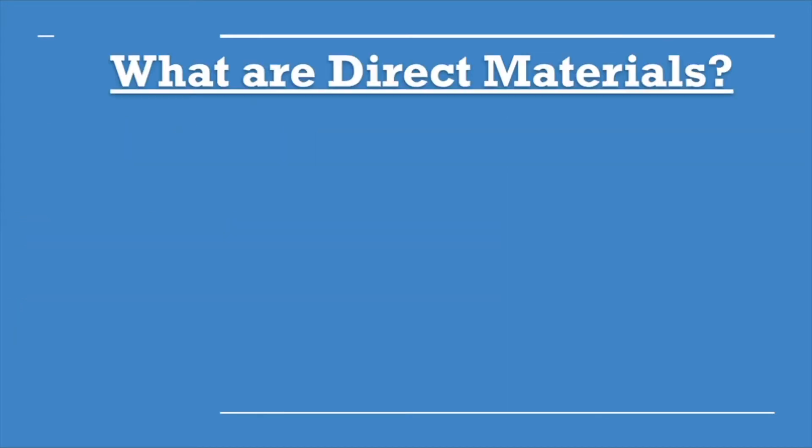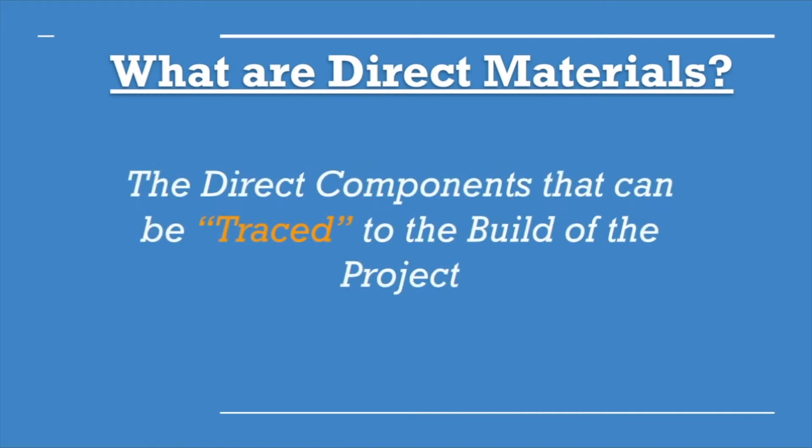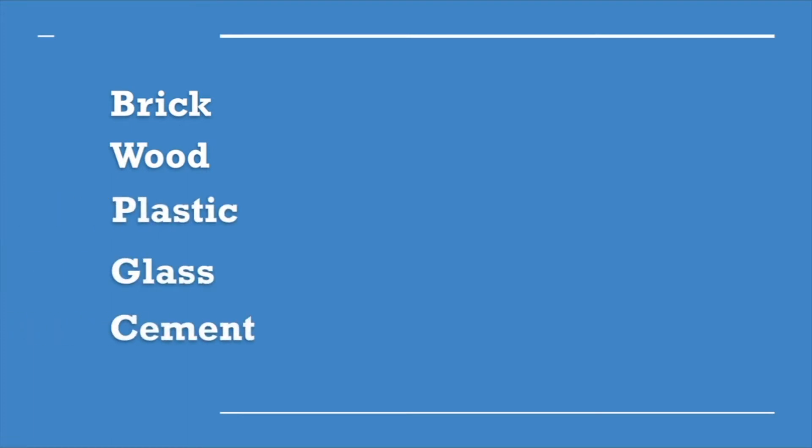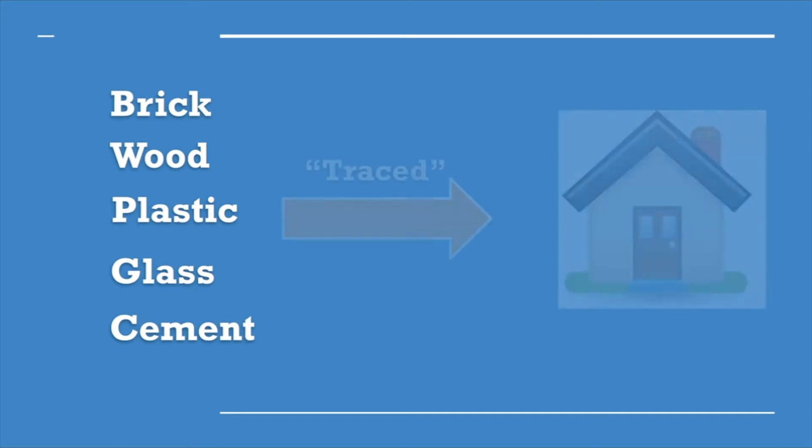What are direct materials? They're the direct components that can be traced to the build of the project. For our house, we have a few materials we need to add: brick, wood, plastic, glass, and cement — all of these can be directly traced to the build of the home. After returning from the hardware store, you figure out the total amount of materials needed for the house, and you paid for it on credit.